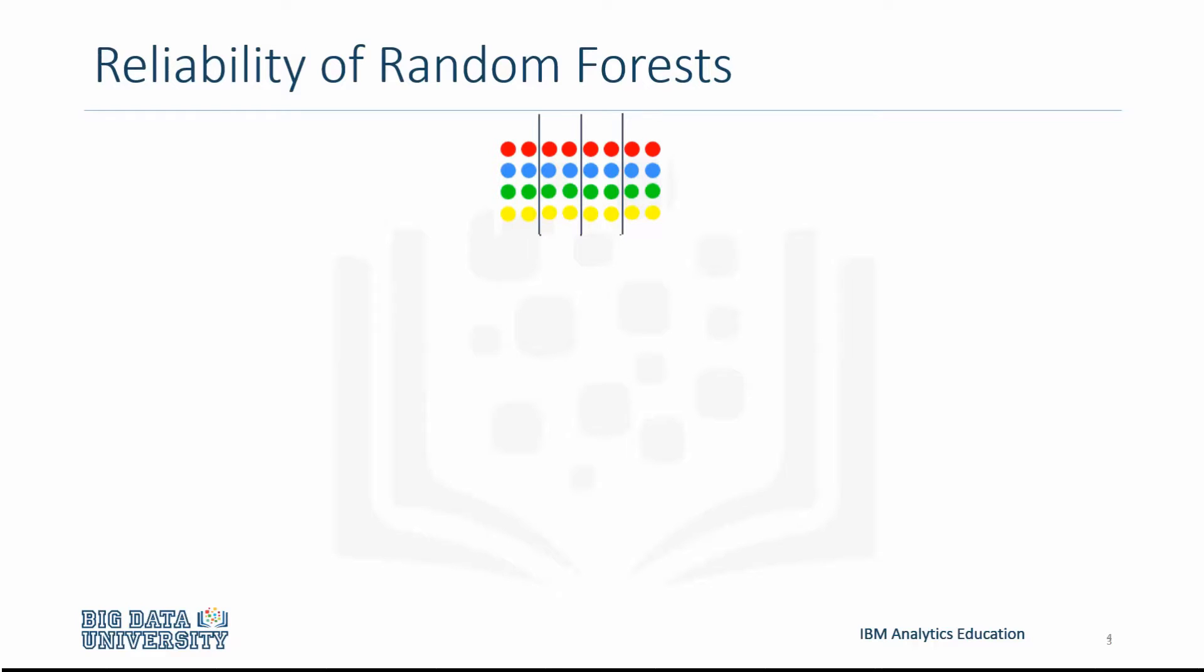However, there is a sense of reliability that comes from the capacity of random forests to find the optimal tree. This is done by randomizing the data sets that creates each tree where there is no overlap in data.